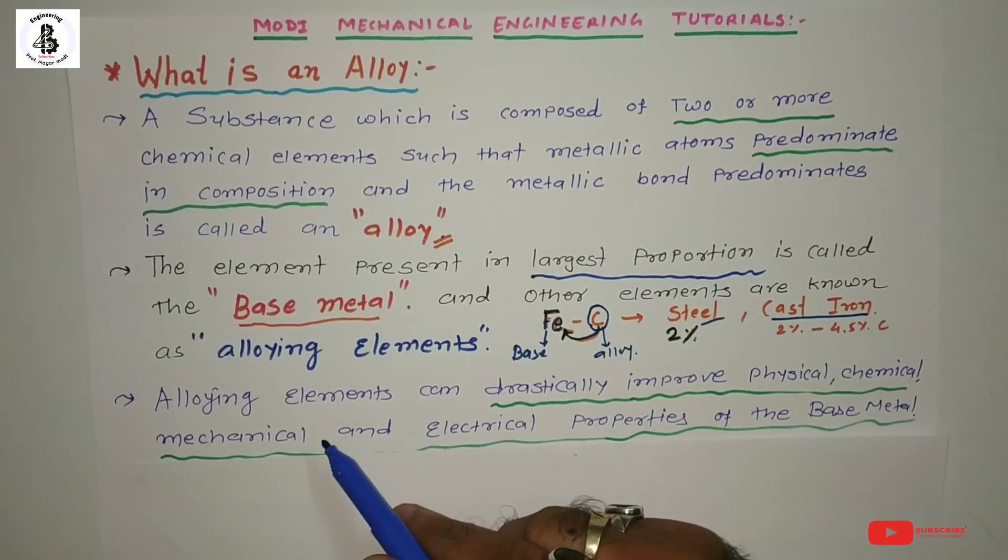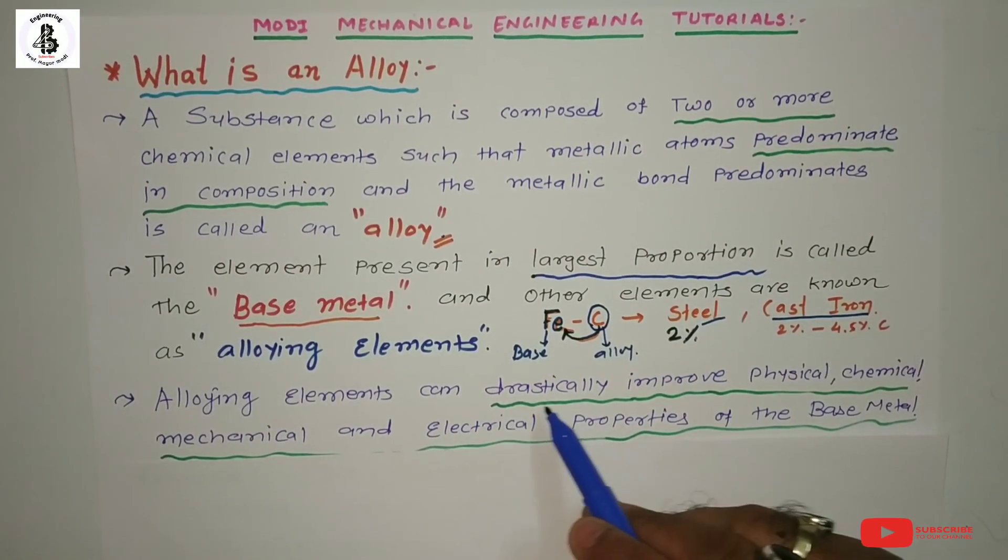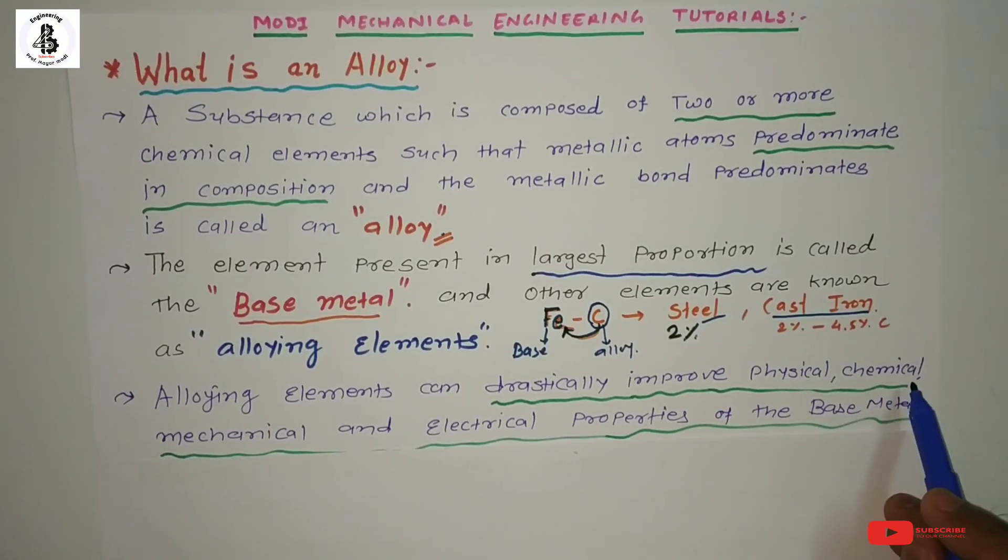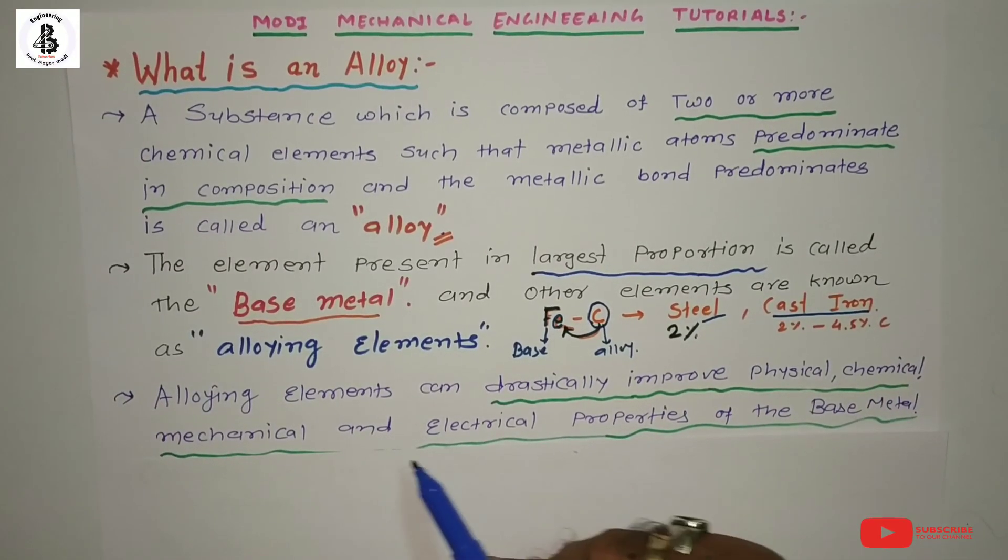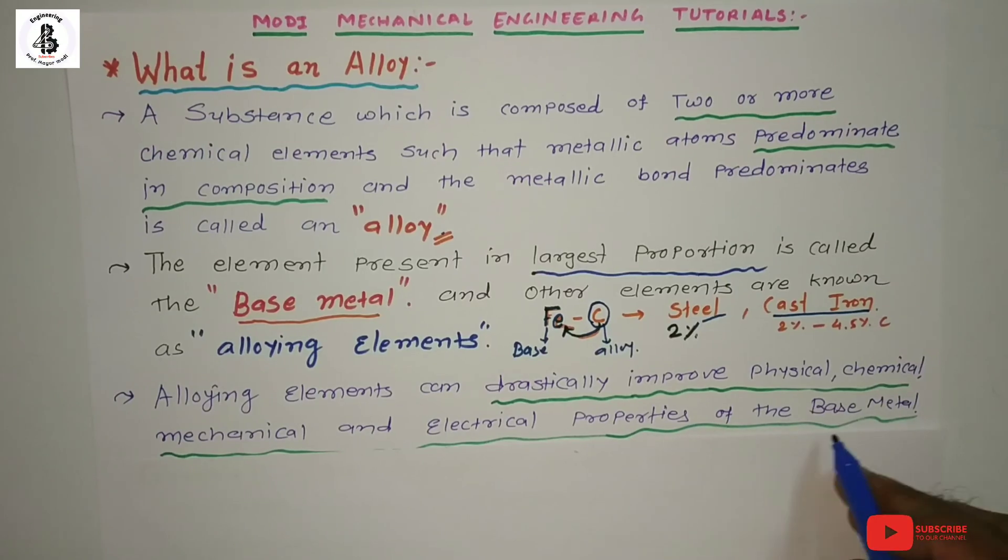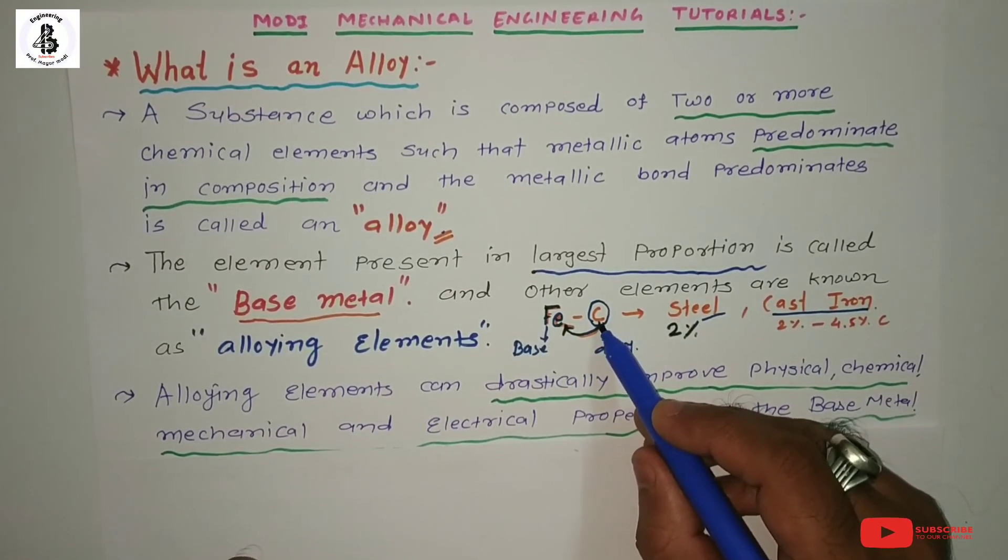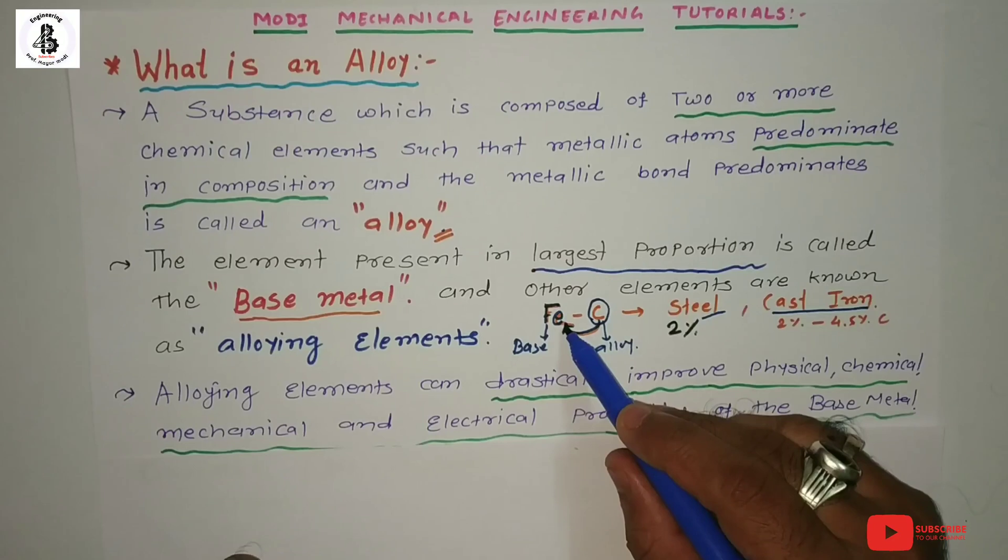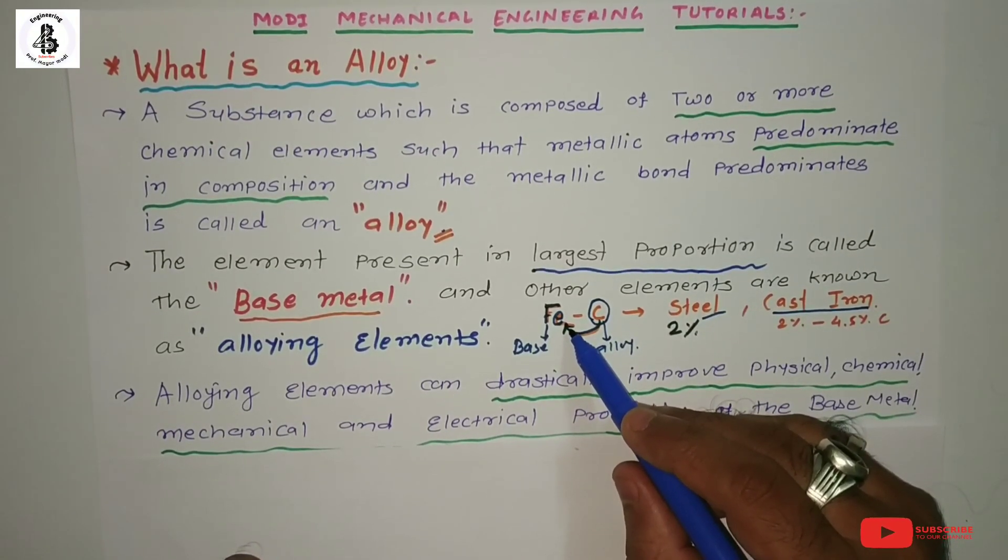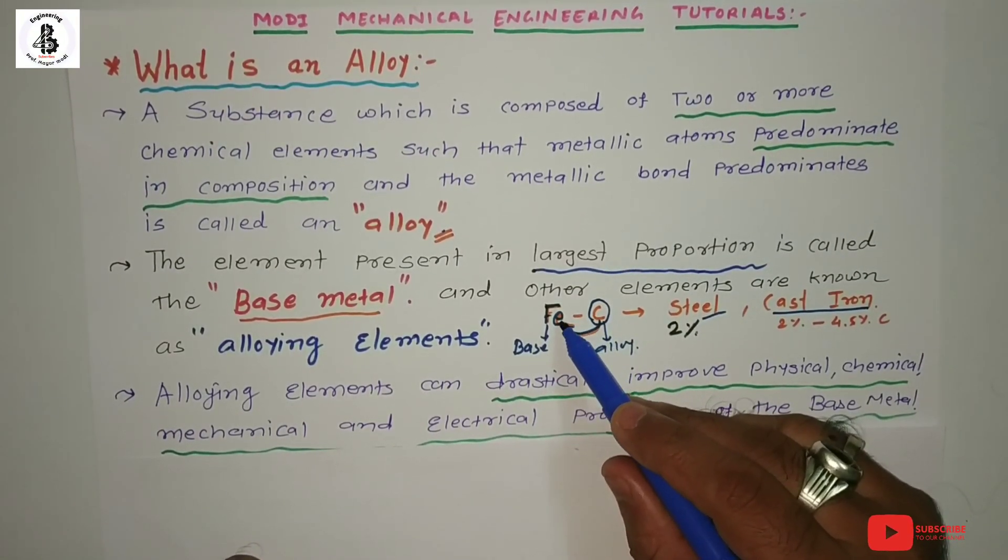Alloying elements can drastically improve the physical, chemical, mechanical, and electrical properties of the base metal. Here, carbon is responsible for increasing the hardness of the material up to certain limits, increasing the strength of iron materials.